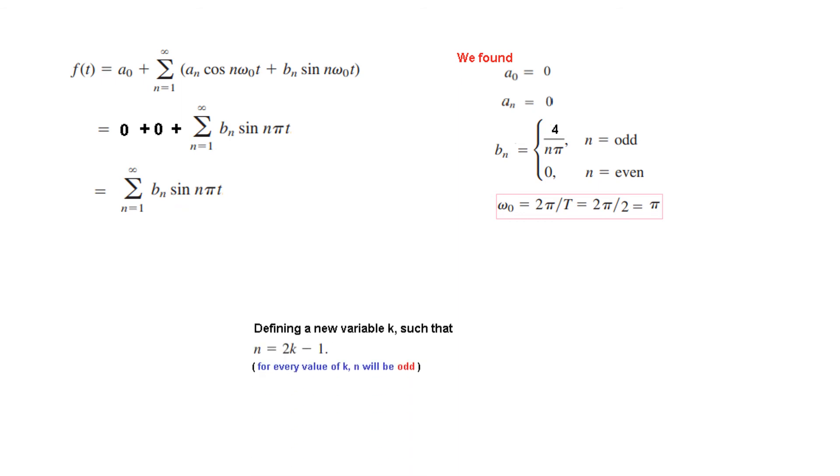And that is we define a variable. New variable k. Such that n is equal to 2k minus 1. Now what we are trying to do is we try to make sure that n remains odd. Now let's try to put value. If k is equal to 1 then this will be 2 minus 1 is 1 which is odd. If k is equal to 2 this will be 2 into 2, 4 minus 1 is 3. That is also odd. If k is equal to 3 it will be 6 minus 1 is 5.